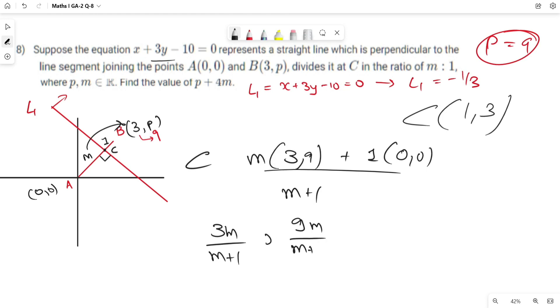On comparing these two coordinates we get 3m upon m plus 1 equals 1, which implies 3m equals m plus 1, so 2m equals 1. Hence value of m equals 0.5.